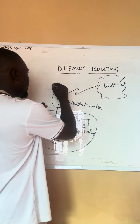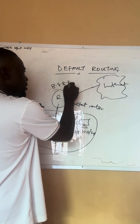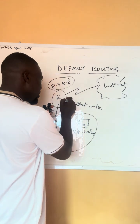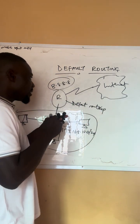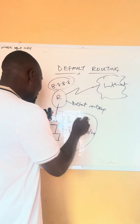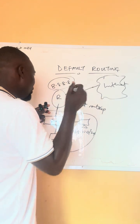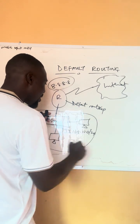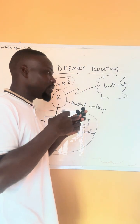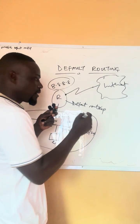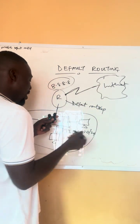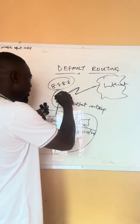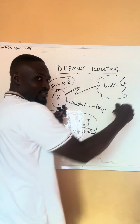For example, if you are going to 8.8.8.8, that address does not belong here at all. So you configure default routing on this router so that any address outside the scope of our internal addresses is sent to this interface. From there you'll be able to access the internet — for instance, if you are going to Facebook, that address is outside our internal scope, so traffic is always sent to that interface and you can access the internet.